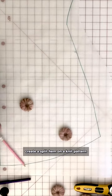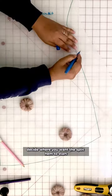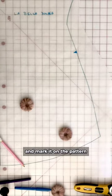Create a split hem on a knit pattern. Decide where you want the split hem to start and mark it on the pattern.